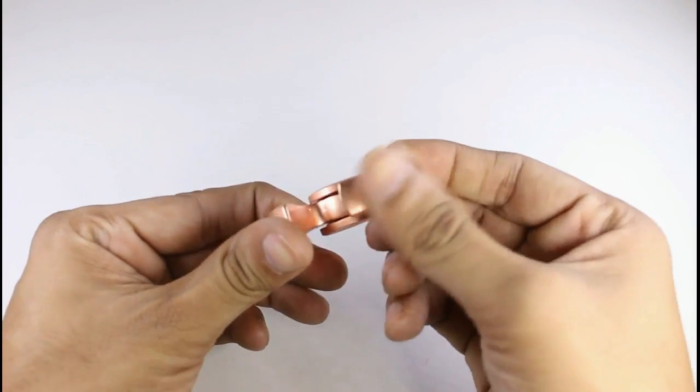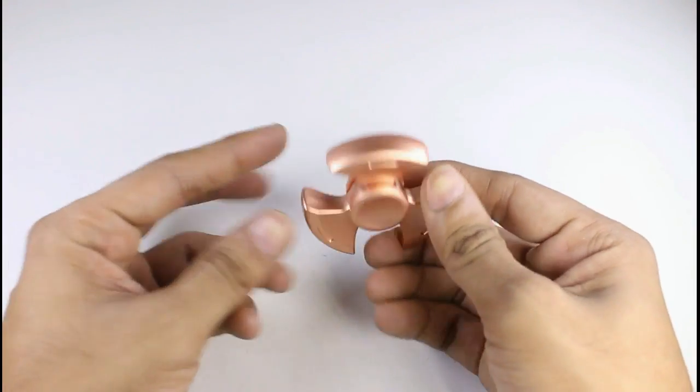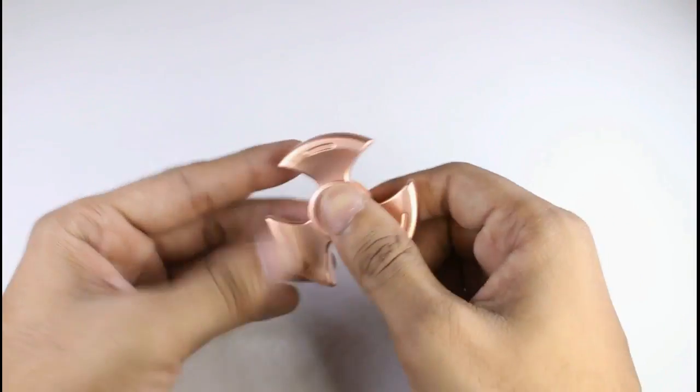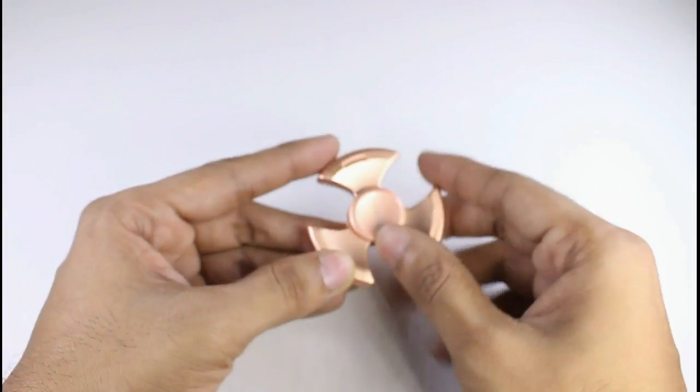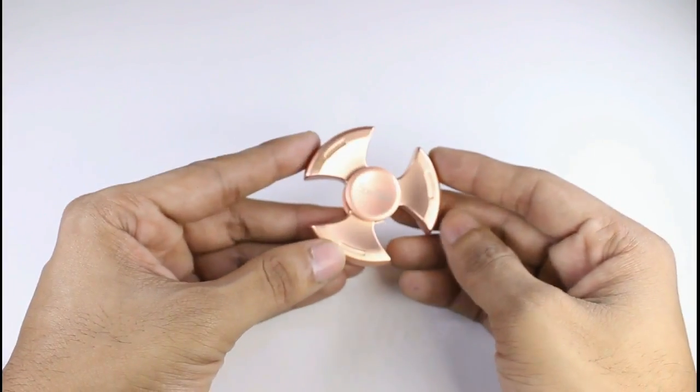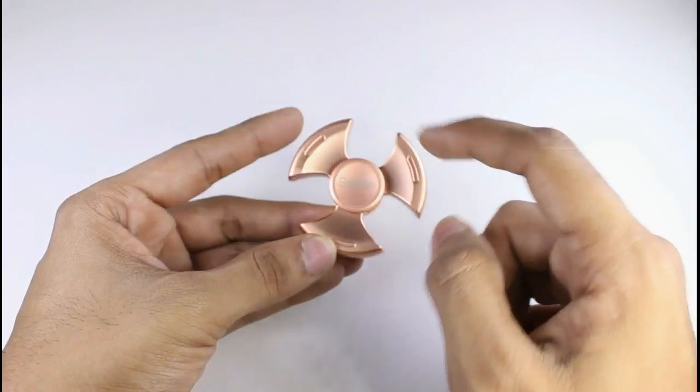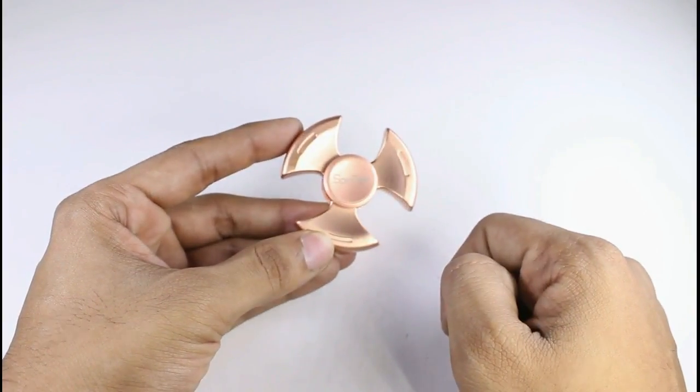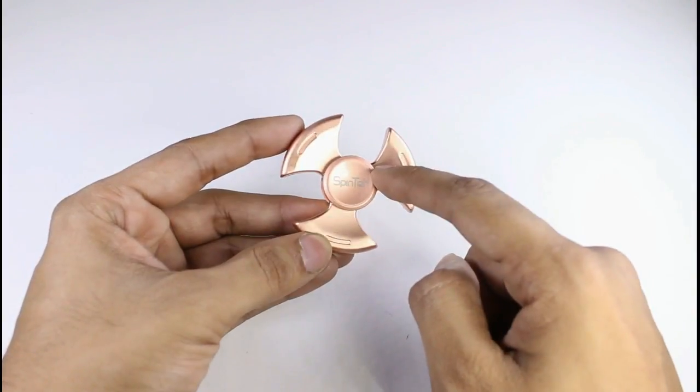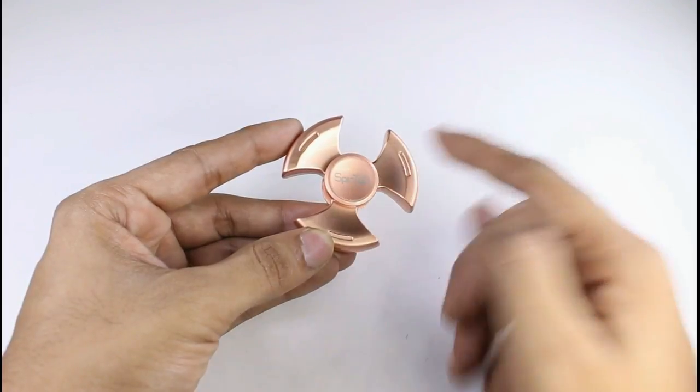Its surface is very smooth and it is well built. Completely metal fidget spinner. Its cap is not removable and its bearing used is hybrid steel bearing which gives very good spin time. So let's check out the spin time of this spinner.